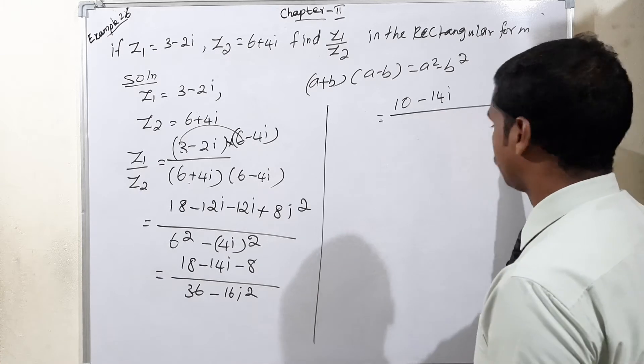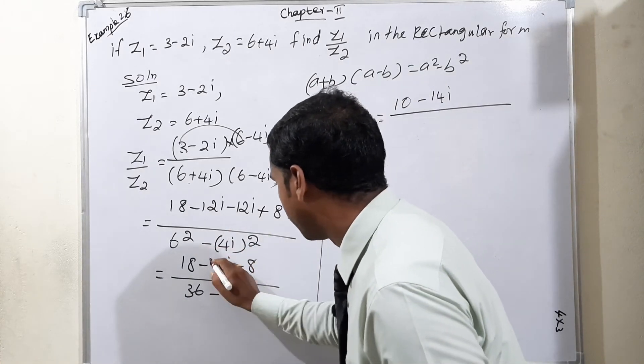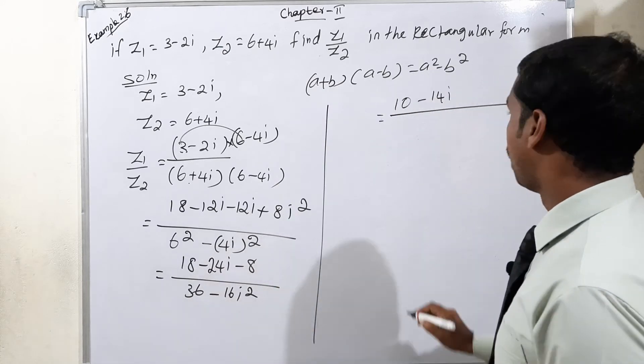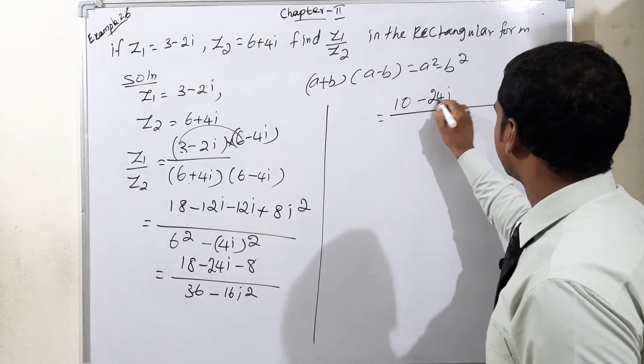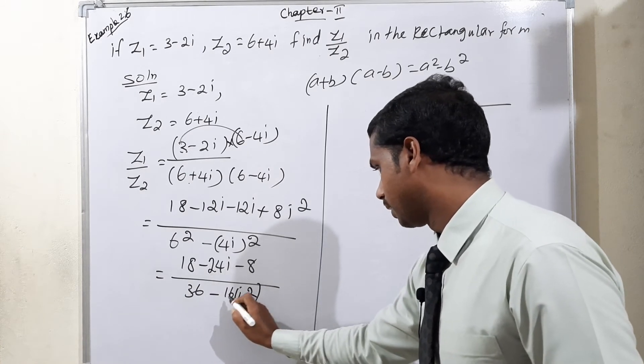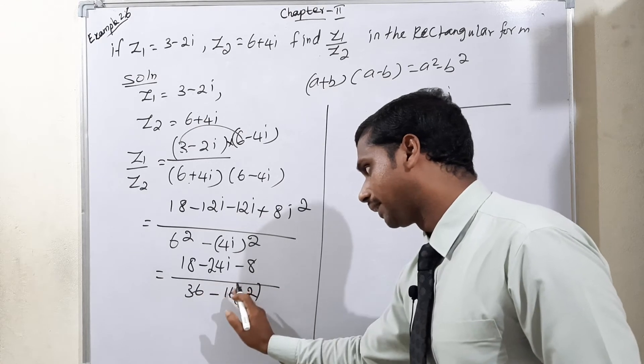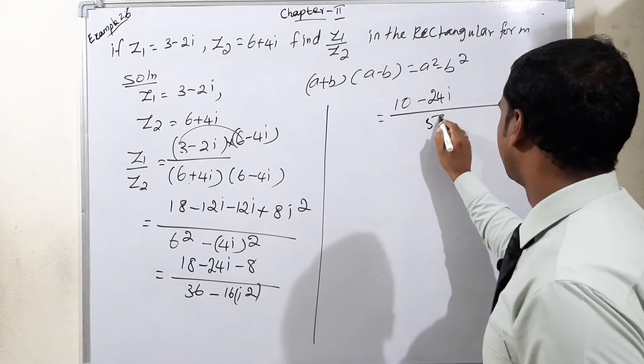Next condition, sorry my dear, minus 12i minus 12i means minus 24i. Now this is minus 24i. Again, this is i square means minus 1. So minus 16 into minus 1 means positive 16. So 36 plus 16 is equal to 52.